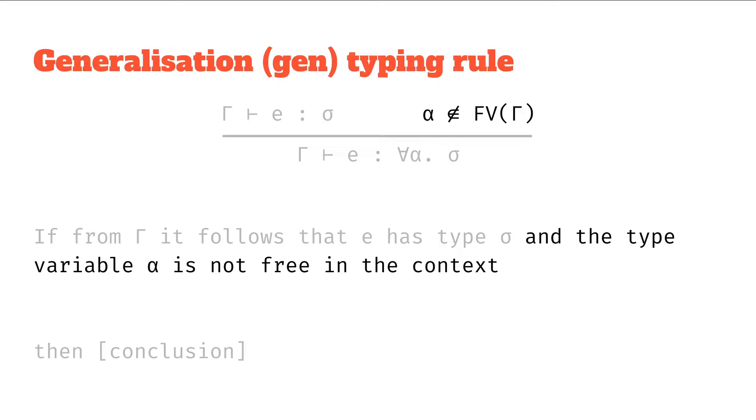And the second part we've already discussed a bit, but this is, and the type variable alpha is not free in the context, right? So we're saying FV of gamma is the free variables in the context. The in symbol, or the set in symbol, I've got a line through it, so that's not in, so it's not in the free variables in the context. Basically it's not free in the context, and we're looking for that variable alpha there.